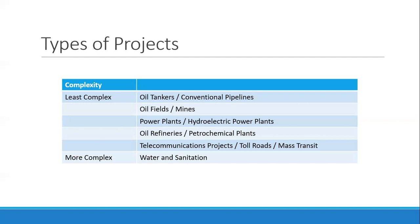That's the case for power plants, oil fields and mines, and conventional gas pipelines — you only build as much as the offtaker requires, which makes project finance easier. Versus water and sanitation, which depends on how much people consume, which you cannot predict. You can forecast it, but it won't be 100% accurate, which makes cash flows more volatile and project finance more difficult.